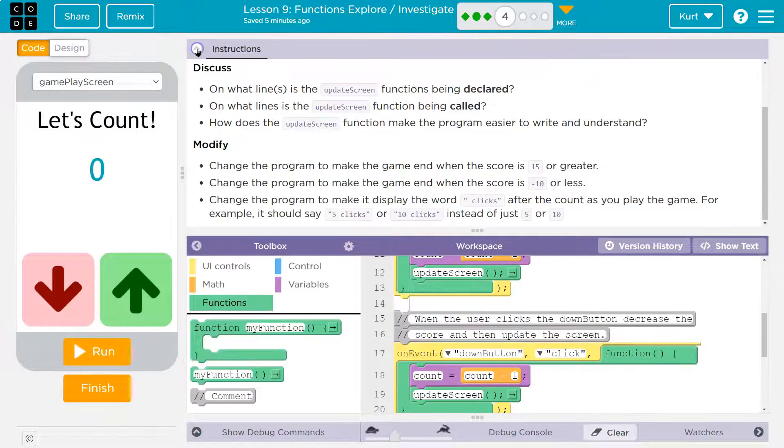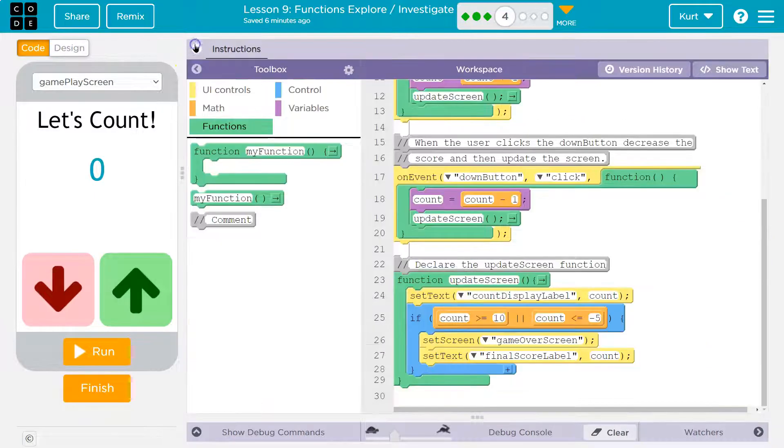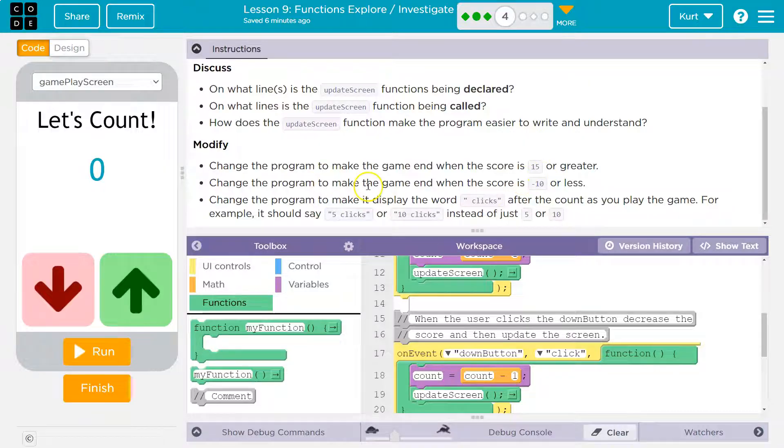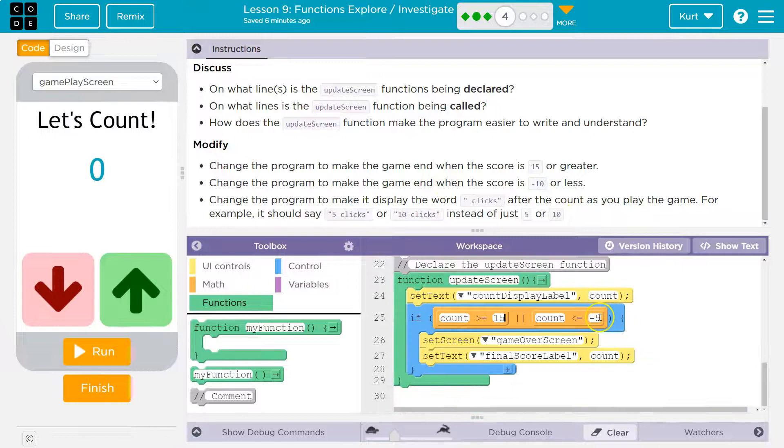So we need it. So what did it say? Change the program to make the game end when the score is greater than 15. All right. Game over—when the score is right now, it's when it's greater than or equal to 10. We need that to be greater than or equal to 15. They say change the program to make the game end when the score is negative 10 or less. Okay. So instead of negative five, negative 10.